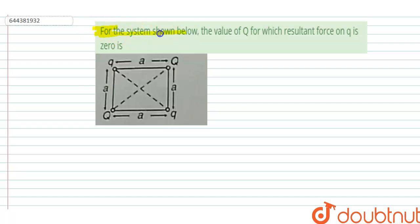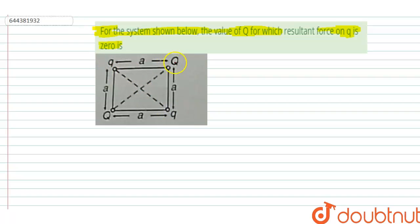In this question, for the system shown below, we need to find the value of capital Q for which the resultant force on small q is zero. In the figure, small q is placed diagonally, and capital Q charges are at the other positions.